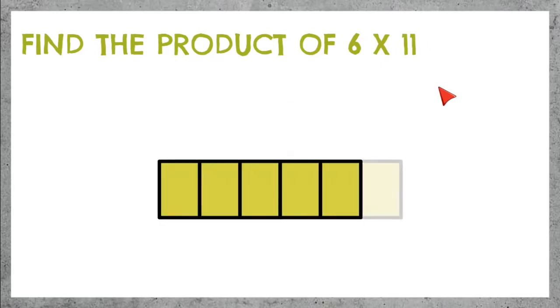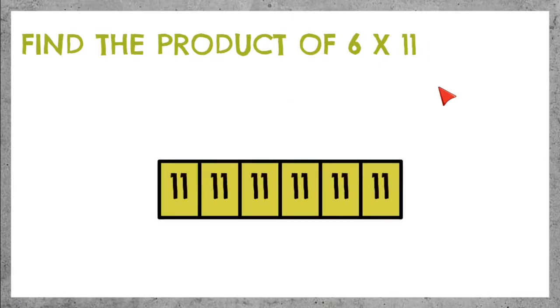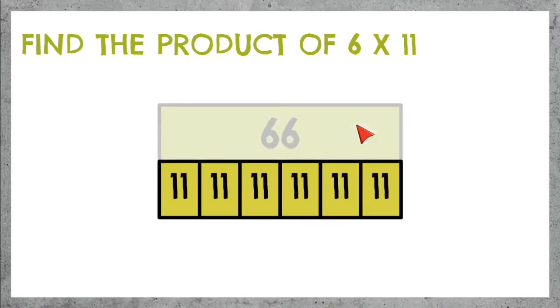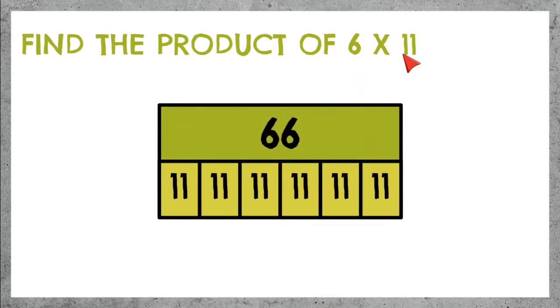6 times 11 — we have 6 parts with 11 inside of each of the parts. If we add up 11 six times, we get 66. 6 parts of 11 makes 66.